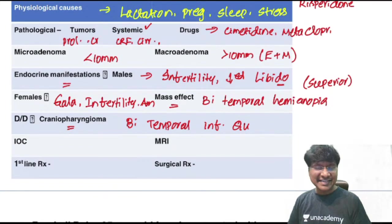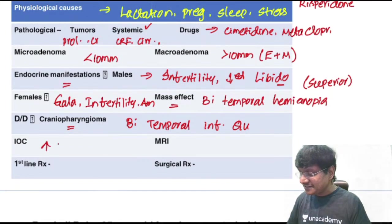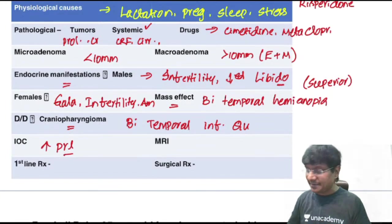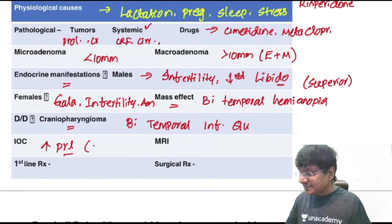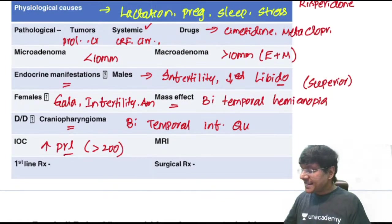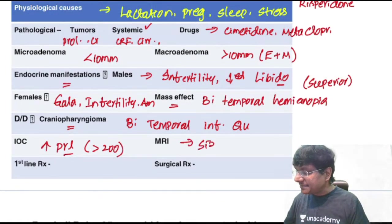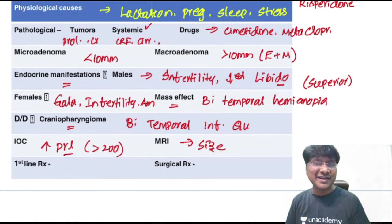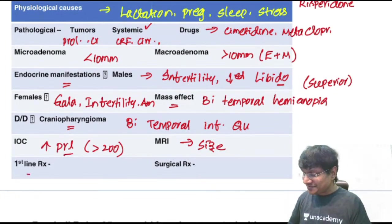Investigation of choice in hyperprolactinemia: prolactin levels are elevated. Normal value is 5–20 ng/mL; in these individuals it will be more than 200 ng/mL. MRI is done to determine the size of the tumor.